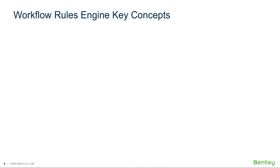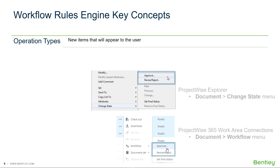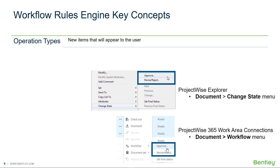Let's start with understanding some key terms of the Workflow Rules Engine. Operation types are the new items that will appear to the user in ProjectWise Explorer on the Document Change State menu, and in ProjectWise 365 Work Area Connections on the Document Workflow menu. These new items only appear when a Rules Engine workflow has been assigned to the selected document's parent folder. In this case, the standard state changing commands — Next, Previous, and Change — are visible but disabled.